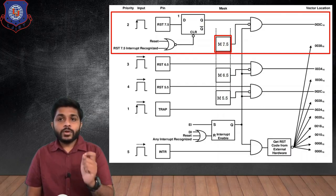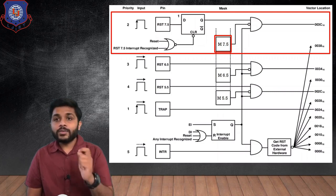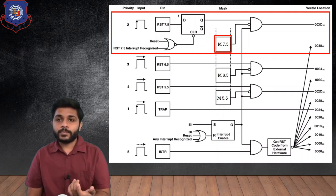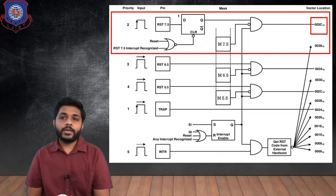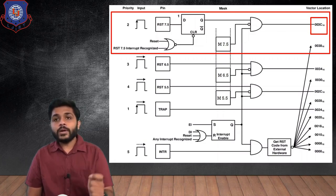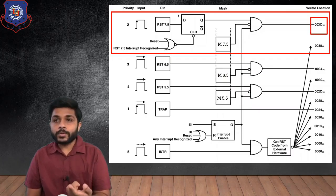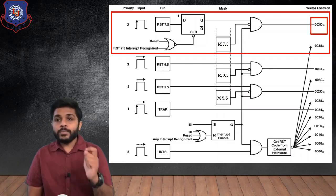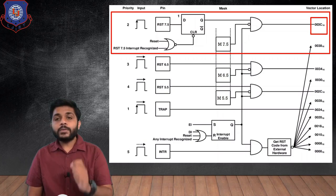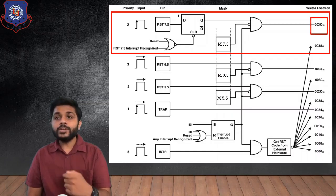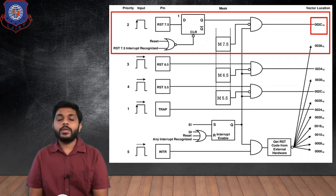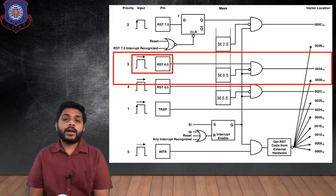You can see there is a MASK 7.5 pin. If the RST 7.5 interrupt is not masked, the value of this pin will be 0, and when this interrupt is not masked we are going to get the vector location for RST 7.5. The vector location means whenever the microprocessor receives any interrupt, the processor will stop its current execution and jump to the vector location. For RST 7.5, the microprocessor will jump to vector location 003CH, and from there the interrupt service routine will execute.